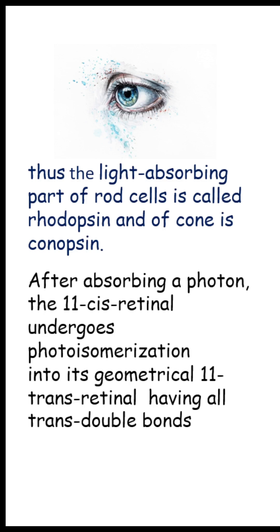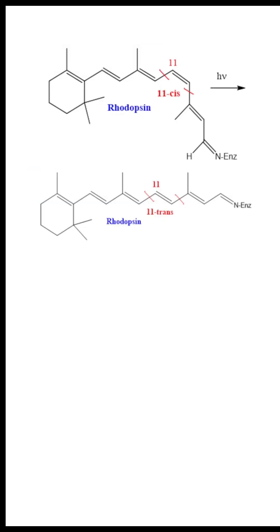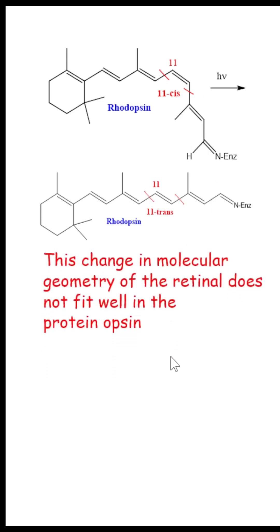The 11-cis retinal is converted into its geometrical isomer, all-trans retinal, having all trans double bonds. This change in molecular geometry of the retinal does not fit well in the protein opsin, since the rhodopsin protein is normally associated with cis retinal, not trans retinal.